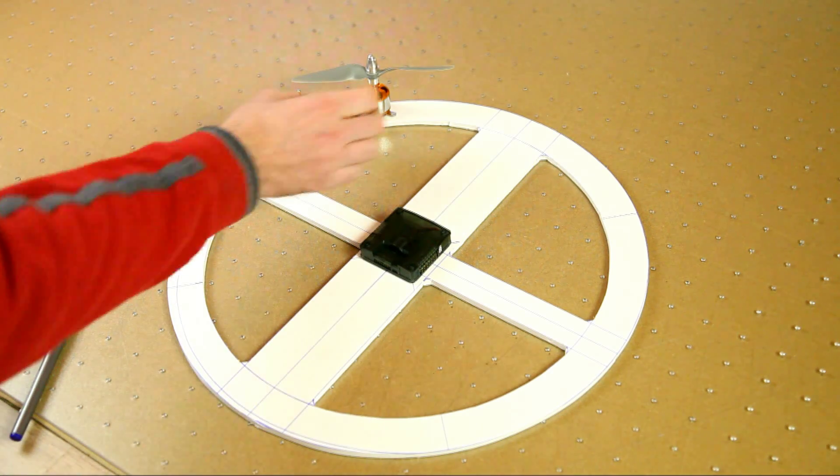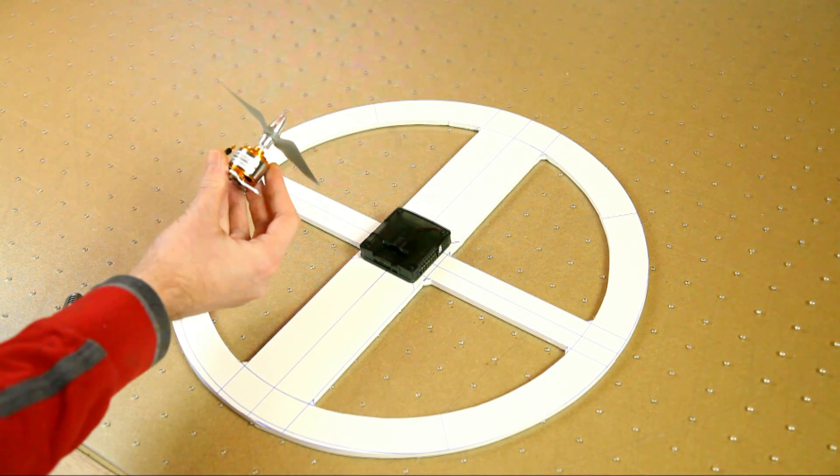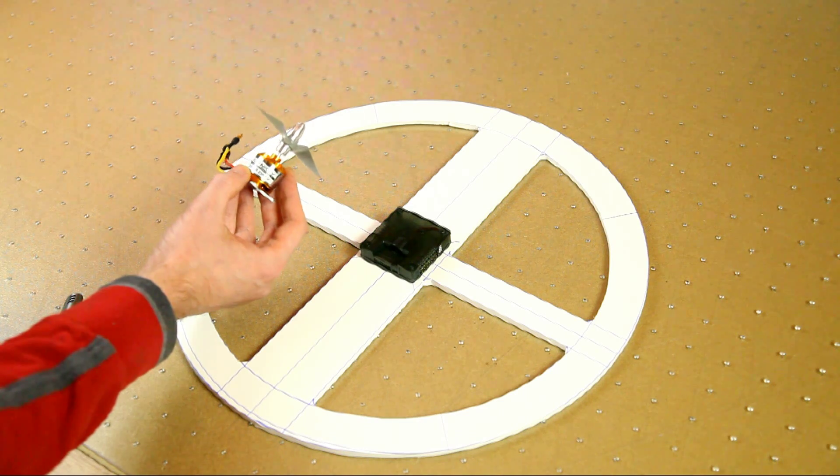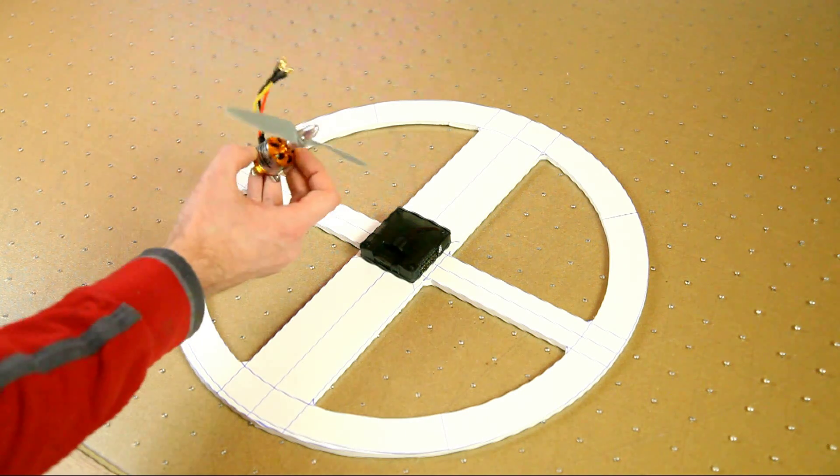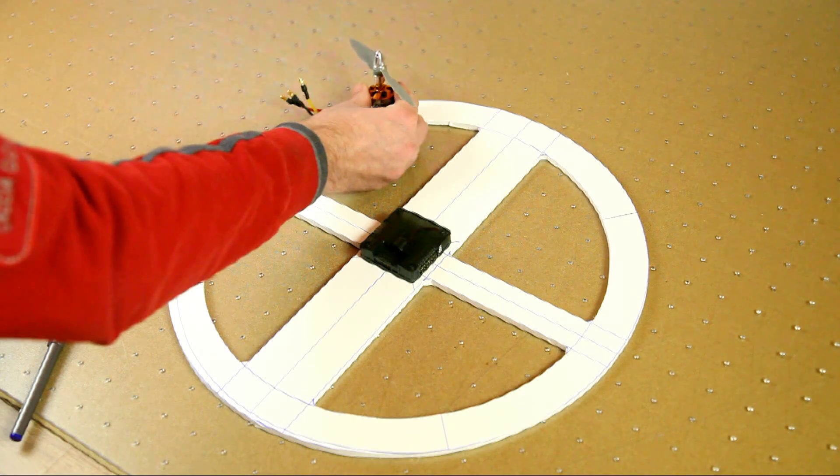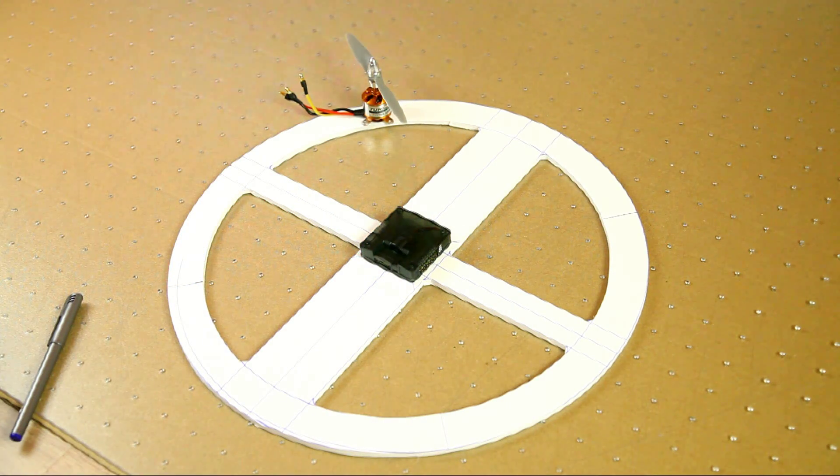I'm going to be using these cheap Turnigy 2200 D28-26 motors. They're very cheap and I have at least four of them laying around, so that's why I'm going to be building the quadcopter with these motors. They're not the best, but I'm going to try to build this quadcopter on a budget. Maybe if you also want to be building a quadcopter, you can follow along and know that this quadcopter will be quite cheap to build.